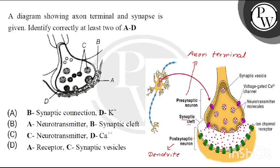Now let's talk about the axon terminal. What is present here? Synaptic vesicles. And what do we mean by the membrane? Because it's the pre-synaptic neuron, the membrane is the pre-synaptic membrane. And these vesicles are called synaptic vesicles.